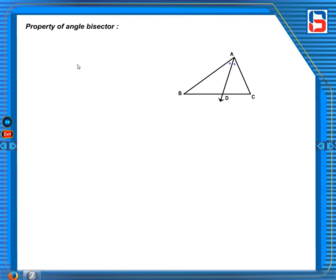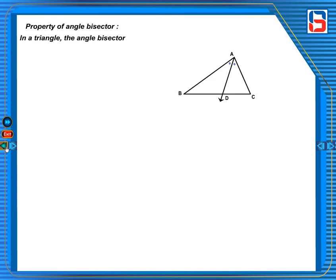Property of Angle Bisector: In a triangle, the angle bisector divides the side opposite to the angle in the ratio of their remaining sides.